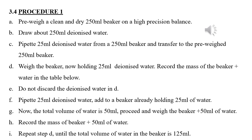Do not discard the deionized water. Pipette another 25 milliliters of deionized water and add it to the beaker already holding 25 milliliters of water — the total volume is now 50 milliliters. Proceed to weigh the beaker plus 50 milliliters of water and record the mass. Repeat this step until the total volume of water in the beaker is 125 milliliters.